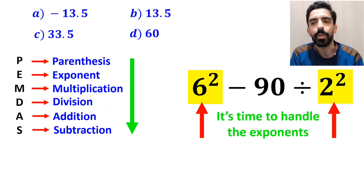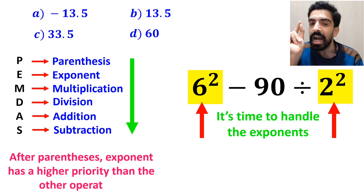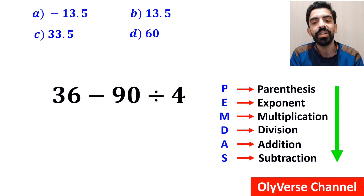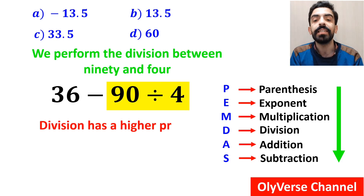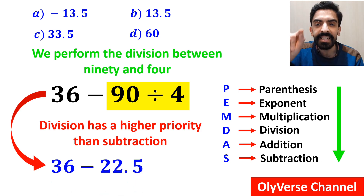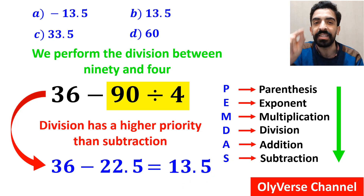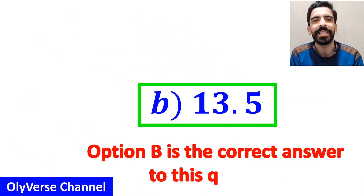Next, it's time to handle the exponents. According to the PANDAS rule, after parenthesis, exponents have higher priority than other operations. So we rewrite the expression as 36 minus 90 divided by 4. In the final step, we perform the division between 90 and 4, because division has a higher priority than subtraction. This simplifies to 36 minus 22.5, which finally gives us the answer 13.5. Option B is the correct answer to this question.